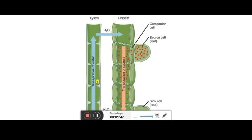In xylem there is only one living cell and the rest are dead ones. They make a column — a pipe-like structure — which takes water from the bottom to the top of the tree. Similarly, phloem also makes a column and translocates food from leaves to different parts of the plant.